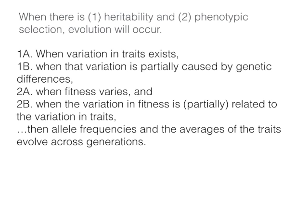We can also break down condition two. Condition 2a is when fitness varies — fitness being something like the number of successful offspring an individual has, so when one mother differs from the next in how many offspring she produces. And 2b is when the variation in fitness is partially related to the variation in traits — for instance, shorter organisms make more offspring and taller ones make fewer.